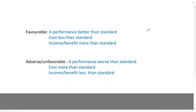Variance could be two main types. It could be a favorable variance, or it could be an adverse or unfavorable variance. A favorable variance is one that is liked, and an adverse variance is one that is not liked.